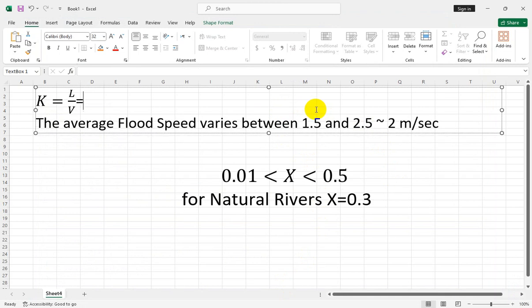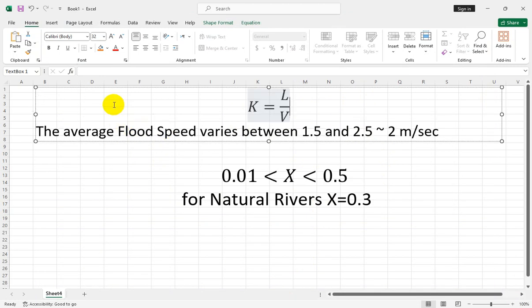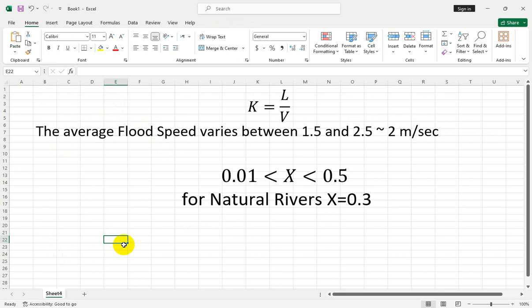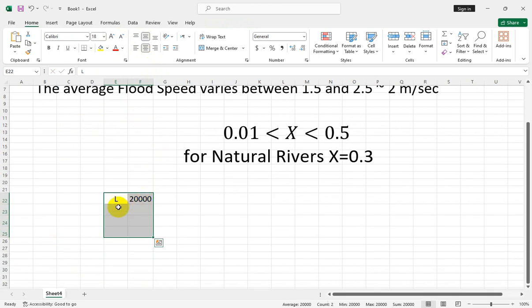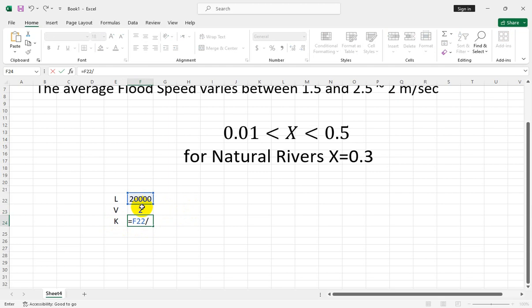For example, let's assume that L equals 20,000 meters and V equals 2 m/s. Finally, the K value is L divided by this number. This unit is in seconds, and you need to divide it by 3,600.